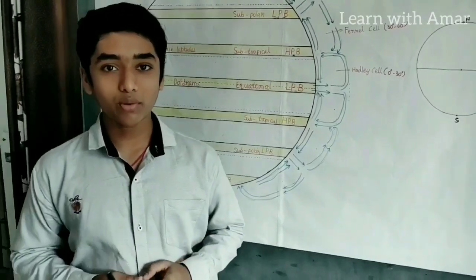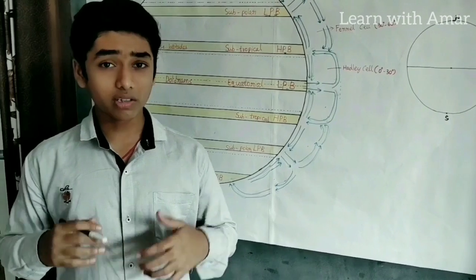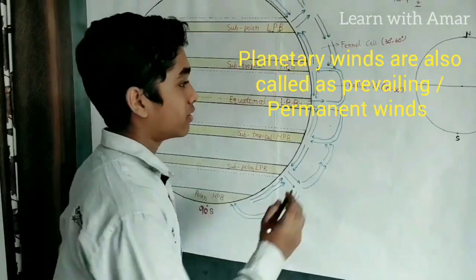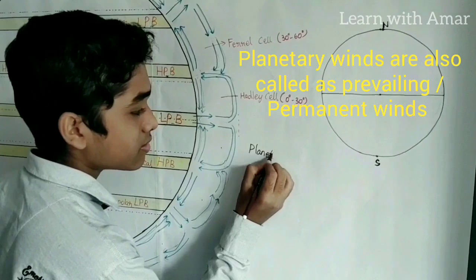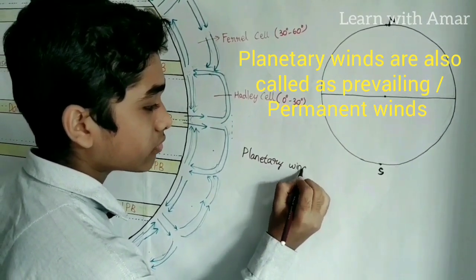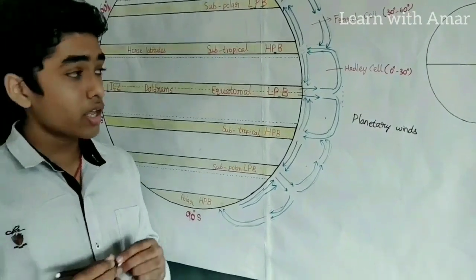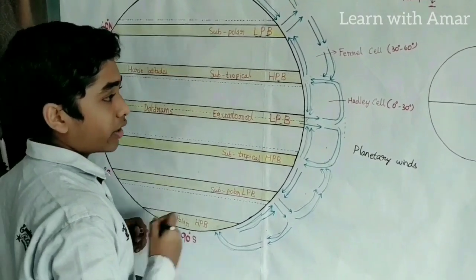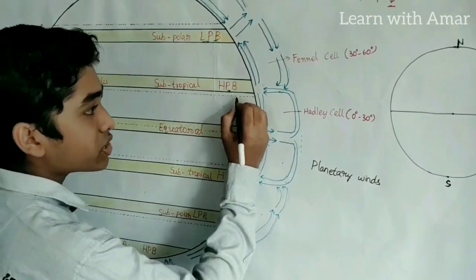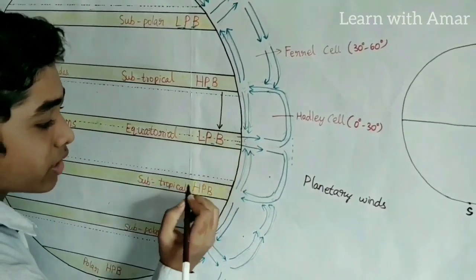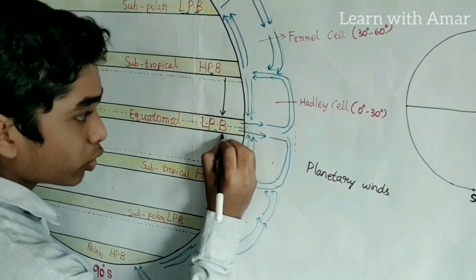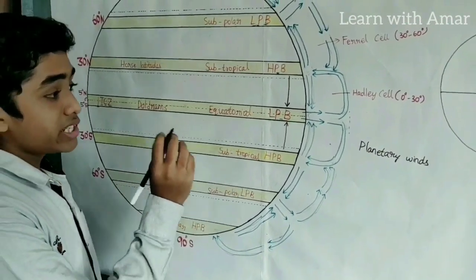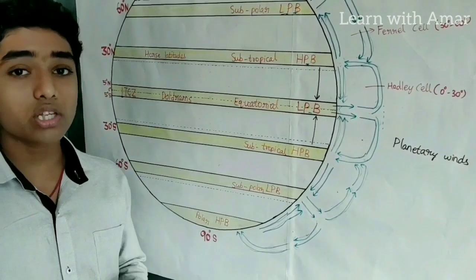Now let us discuss about the winds — first the planetary winds. What are planetary winds? The winds that blow in the same direction throughout the year are known as planetary winds. These blow from high pressure belts to the low pressure belts. However, this is not the case in the real earth, because the wind direction is affected by another factor known as the Coriolis effect.